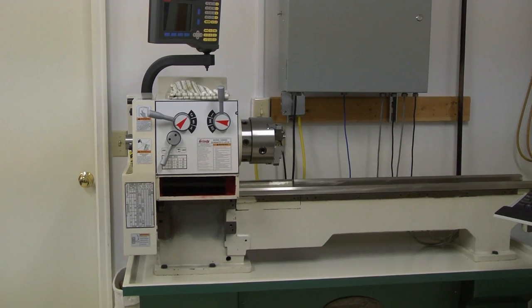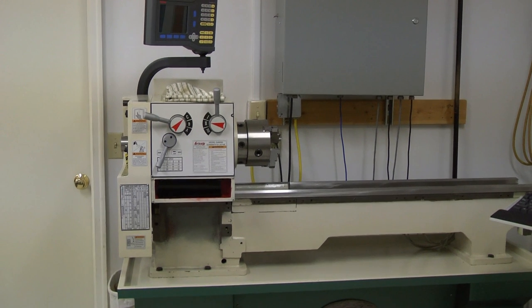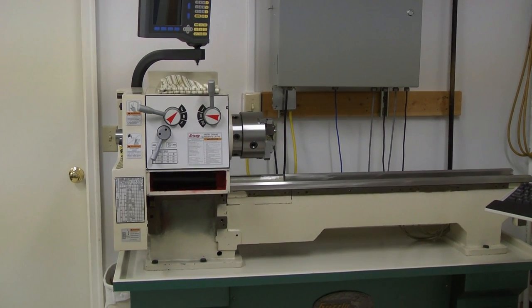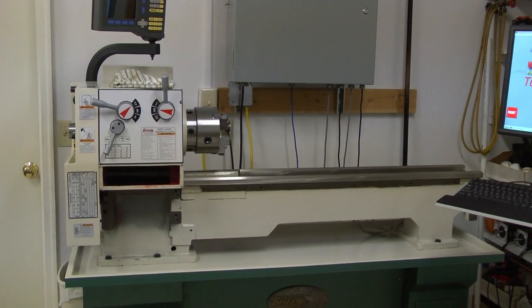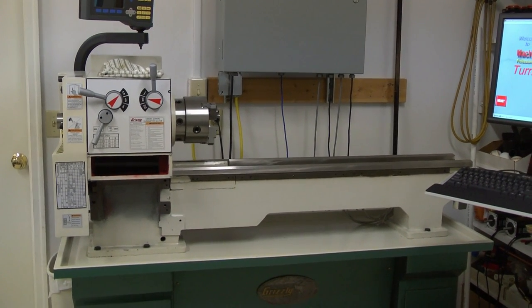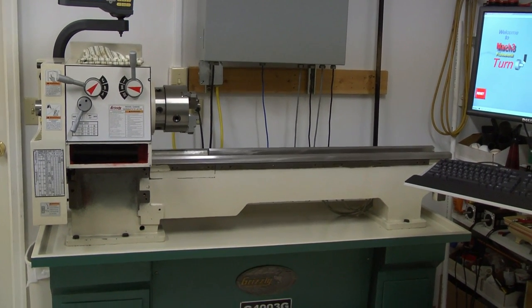Well howdy, this is a Grizzly 4003G, or it was. It's in the process of being converted. I've got it completely stripped down. I've got all the drive components off of it, the carriage is off, all the drive rods.